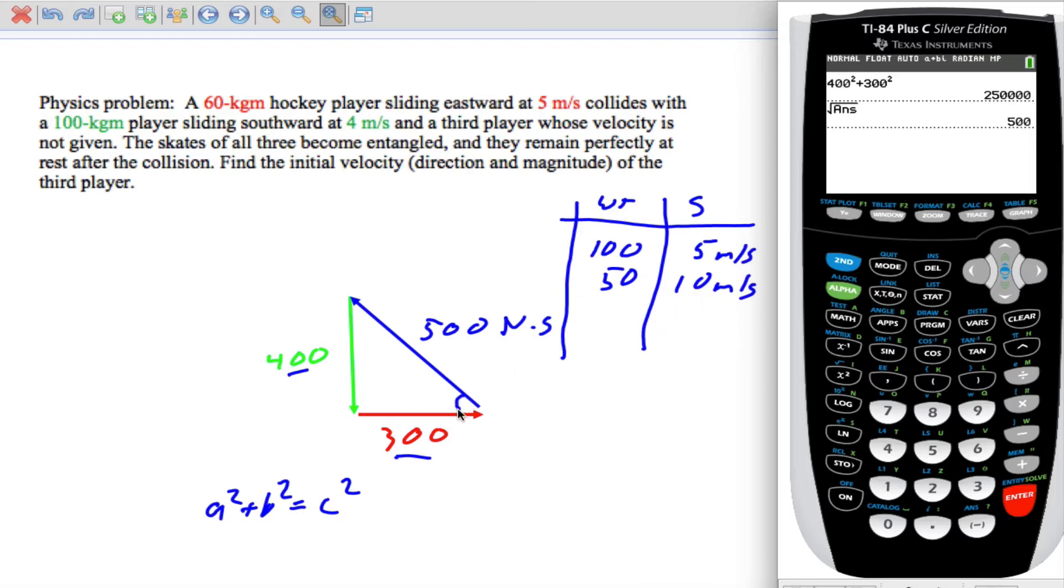The question is, what is this angle? So to calculate that angle, since this is a right angle, we can do inverse tangent of 400 over 300 or 4 over 3. So we'll do inverse tangent of 4 divided by 3. And because 400 is bigger than 300, we should get an angle greater than 45 degrees.